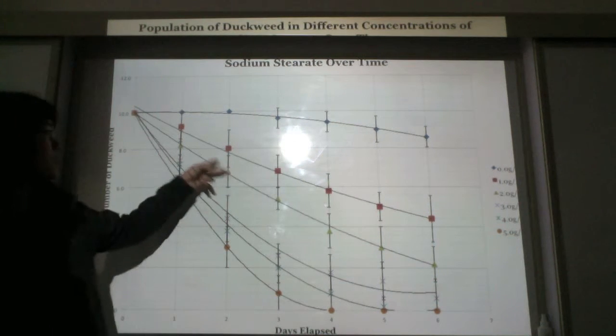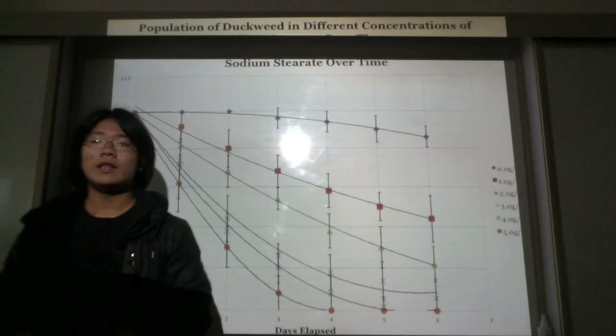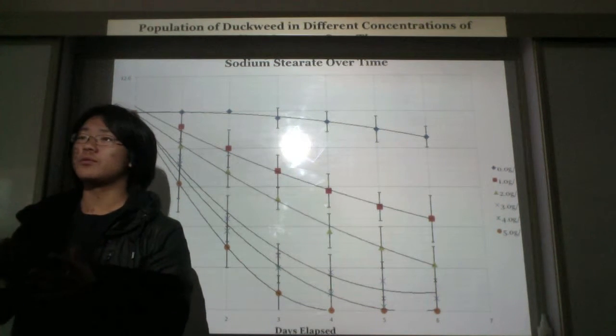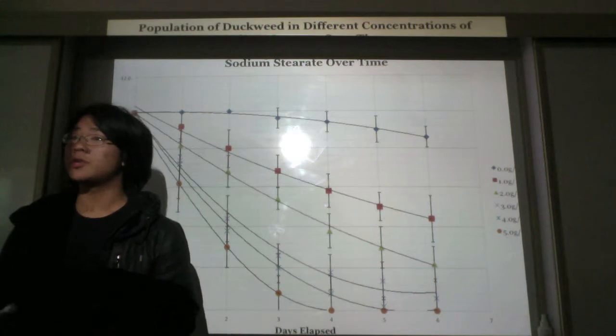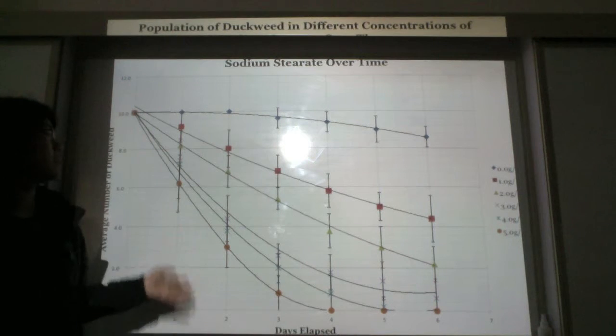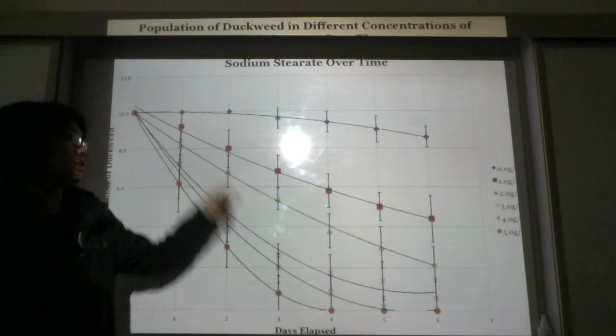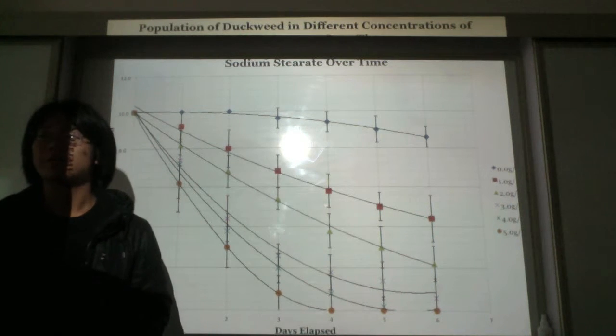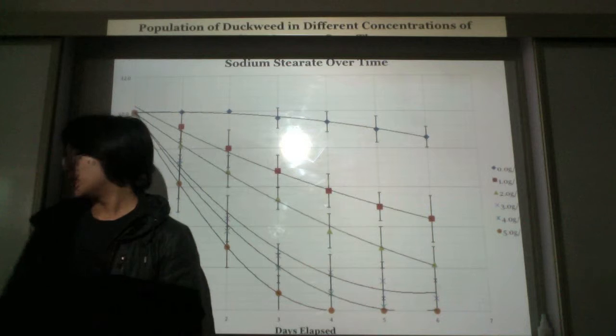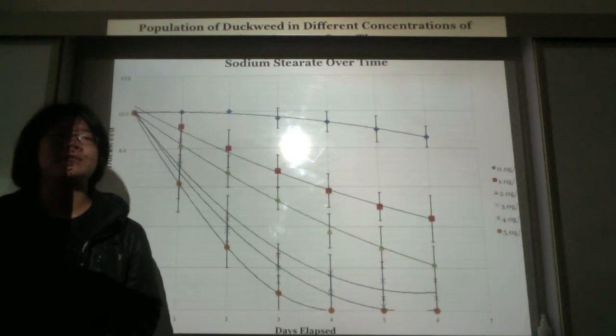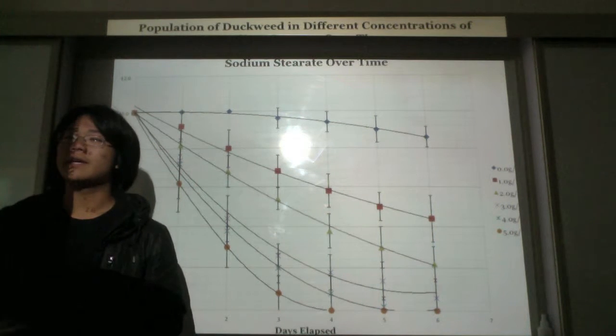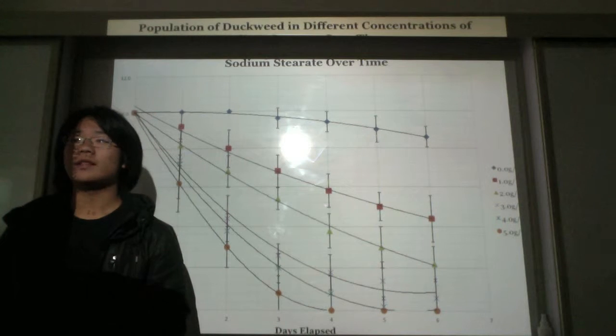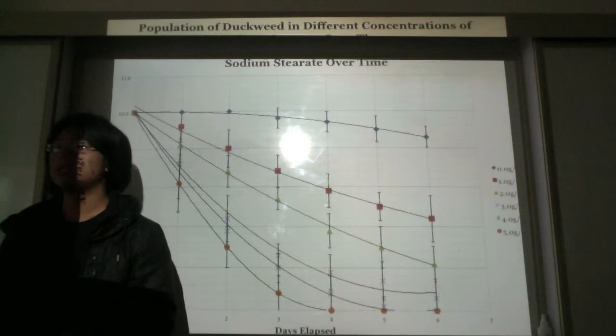However, for these two trials, the surface of the duckweed was still above the water, meaning they could still transpire. However, the presence of surfactants still actually led them to show an increased rate of population decrease, meaning more and more duckweed were dying off. This is kind of showing some implications for the effect of surfactants on the plant's roots' ability to take in water.